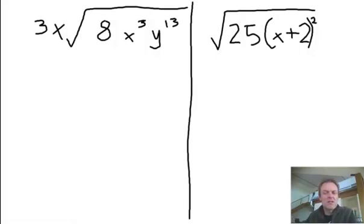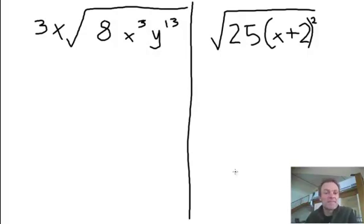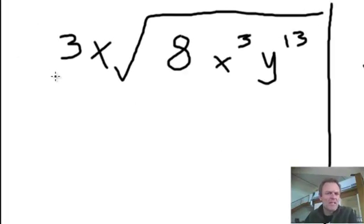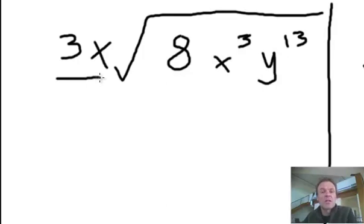Let's have a look at a few more complicated ones. Again, I'm just doing square roots — we'll move on to cube roots later. This one over here already has a 3x outside, nothing to do with the square root.